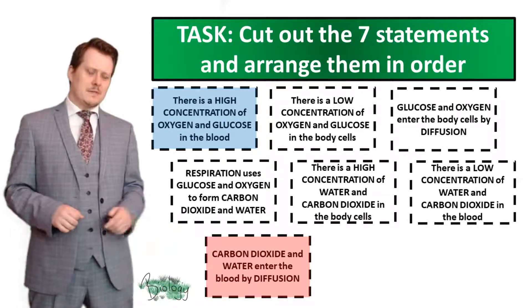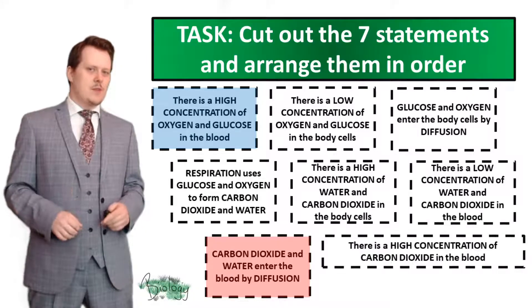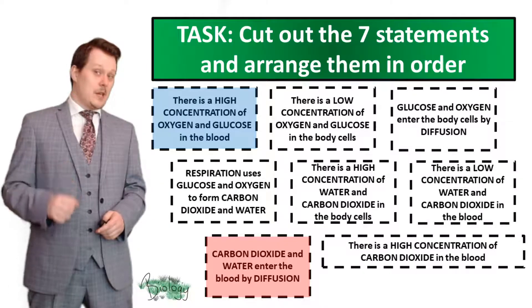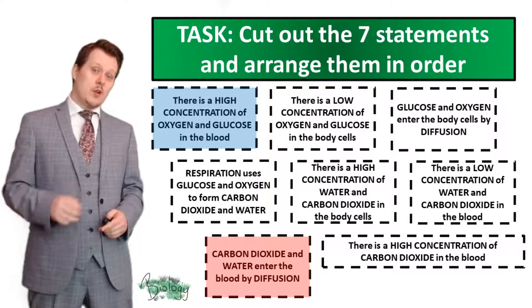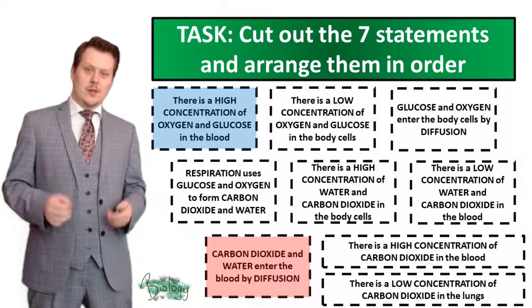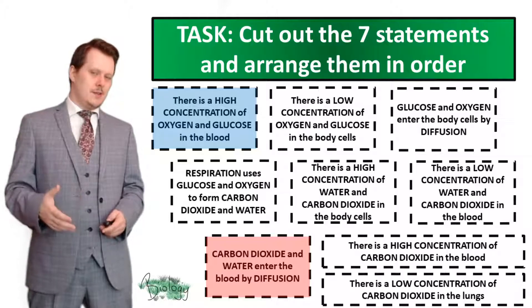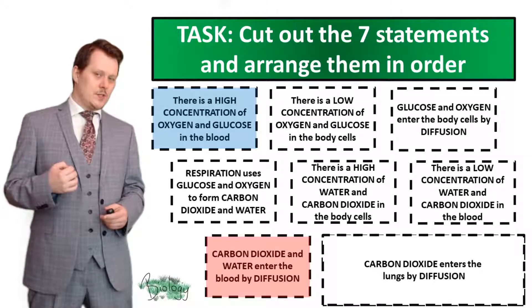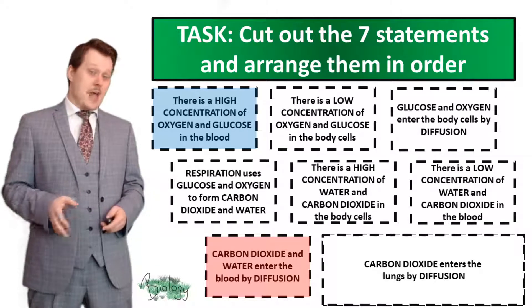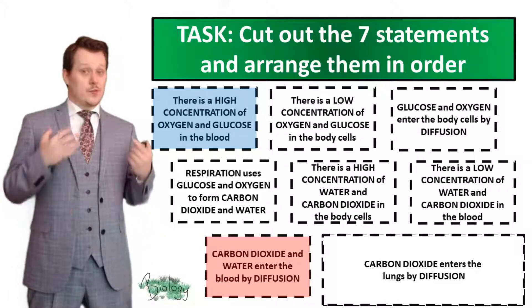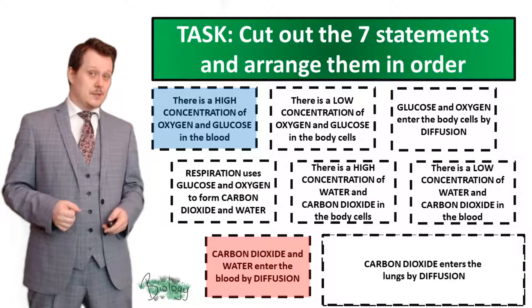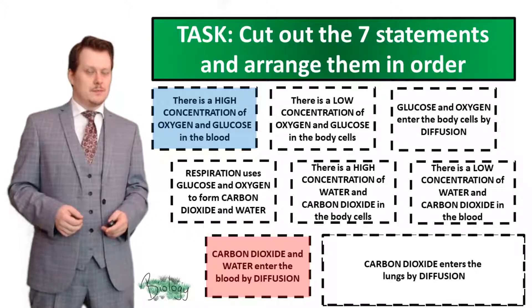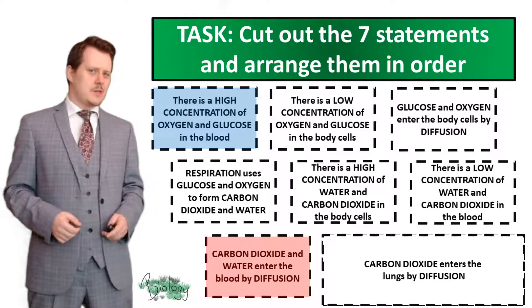For the challenge — what happens after the seventh statement? We now have a high concentration of carbon dioxide in the blood, and there is a low concentration of carbon dioxide in the lungs. That means carbon dioxide enters the lungs by diffusion so that you can breathe it out. At the same time, oxygen diffuses from the lungs back into the red blood cells. What do you think happens to all the water produced by aerobic respiration? If you've got any suggestions, I'd like to hear them in the comments below.